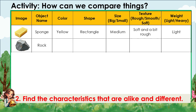For the rock: the color is gray, the shape is irregular, the size is medium, the texture is rough, and it is quite heavy.